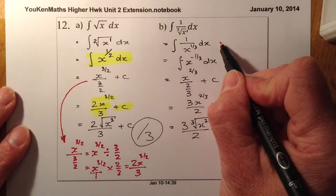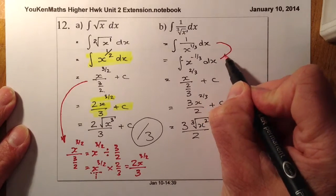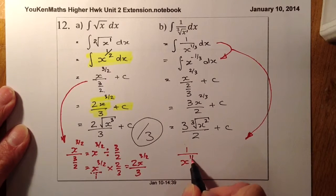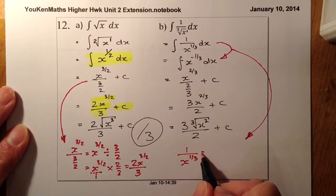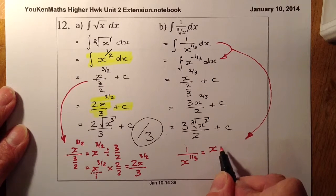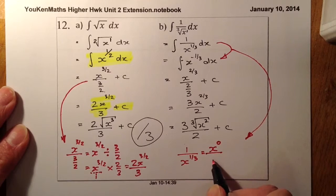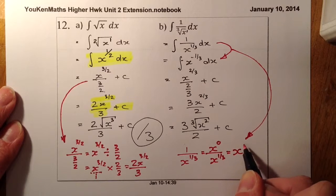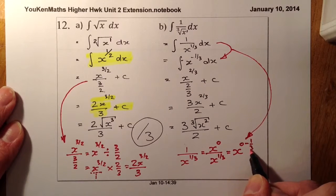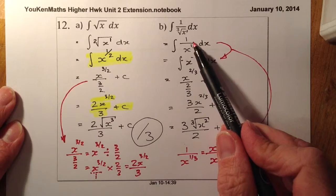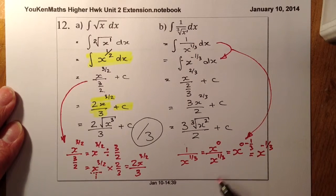Let me show you how we get from 1 over X to the power of a third to X to the minus a third. I know that anything to the power of 0 equals 1, so X to the power of 0 is still 1. I've got X to the power of a third on the bottom. Working with indices, when dividing you subtract, so that's X to the power of 0 minus a third, which gives X to the power of minus a third. That's how I get from that line to that line.